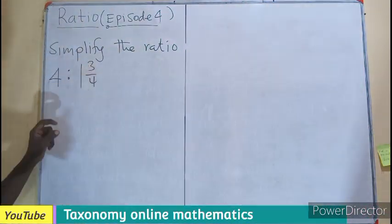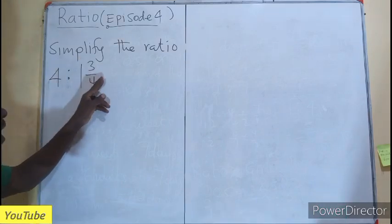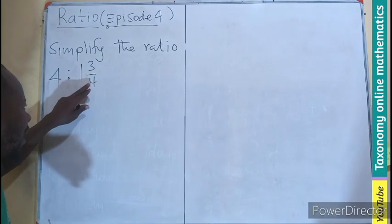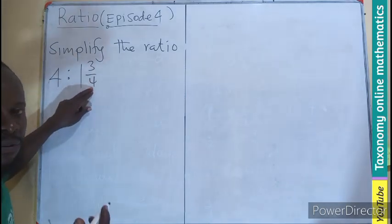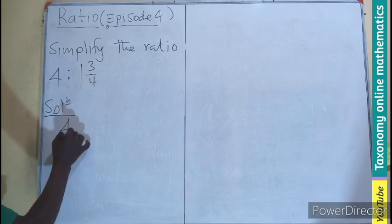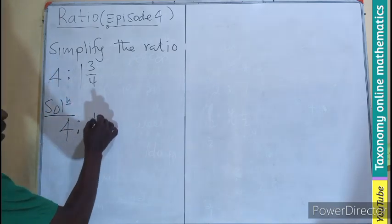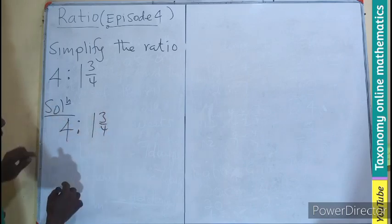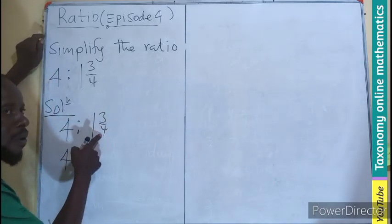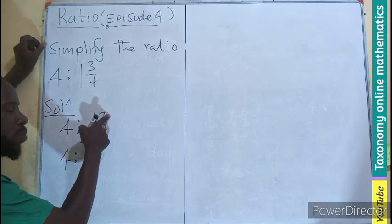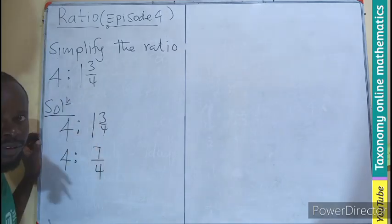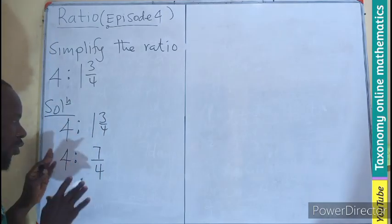First, we are going to deliver it as a ratio, then convert this into an improper fraction. Solution: we have 4 is to 1 whole number 3 on 4. We can rewrite that as 1 times 4, that will be 4, plus the numerator, that will be 7 divided by 4.